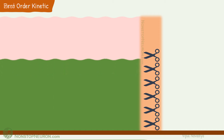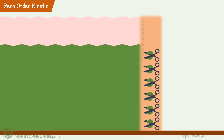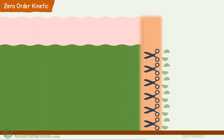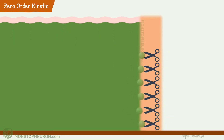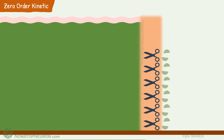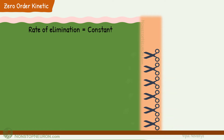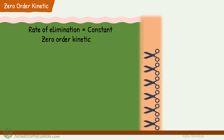If we keep increasing the drug concentration, a point comes where the enzyme system gets saturated. All the enzymes are working at full capacity now. At this point, rate of elimination reaches its maximum. Further increase in plasma concentration no longer increases the rate of elimination. So, once the elimination process gets saturated, rate of elimination remains constant irrespective of plasma concentration. Such kinetics is called zero-order elimination kinetics.